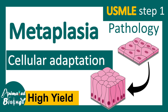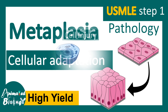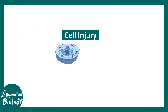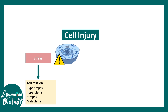In this video we'll be talking about metaplasia, which is one type of cellular adaptation. Let's see what happens to a cell when it undergoes an injury. This cell has undergone an injury so it is in a stressed situation, and it would obviously try to adapt to the condition. There are different ways of adaptation.